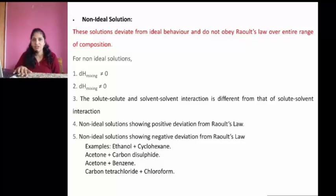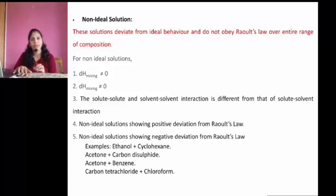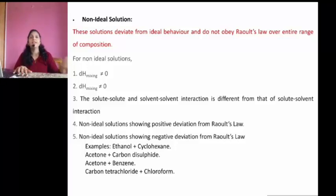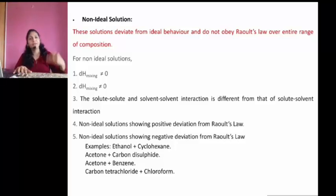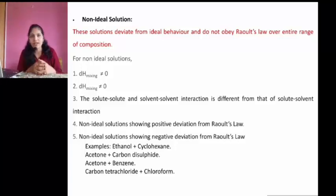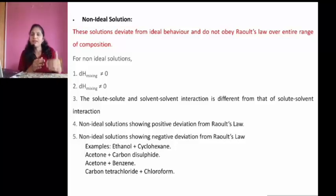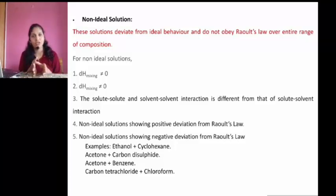Now let's move towards non-ideal solutions. These solutions deviate from Raoult's Law at all conditions of temperature and pressure — they do not obey Raoult's relation or observation. Such solutions are known as non-ideal solutions. For non-ideal solutions, delta H is not equal to zero. Similarly, delta V is also not equal to zero — it may be greater than zero or less than zero, meaning the volume of the solution may be greater or smaller. Similarly, delta H may be greater than zero or less than zero. Those solutions come under the non-ideal class.